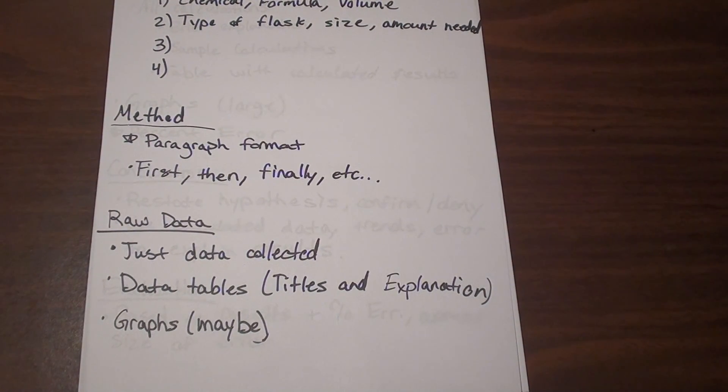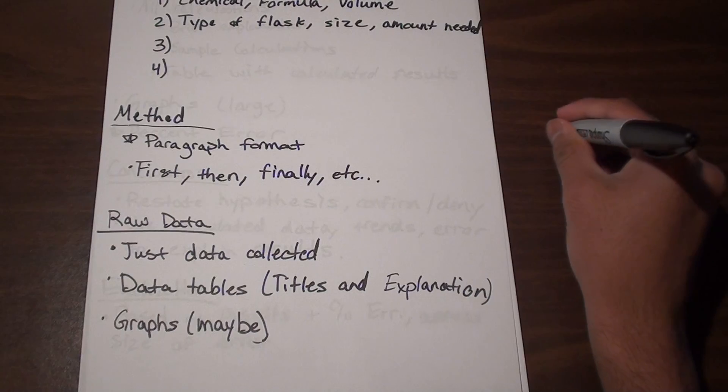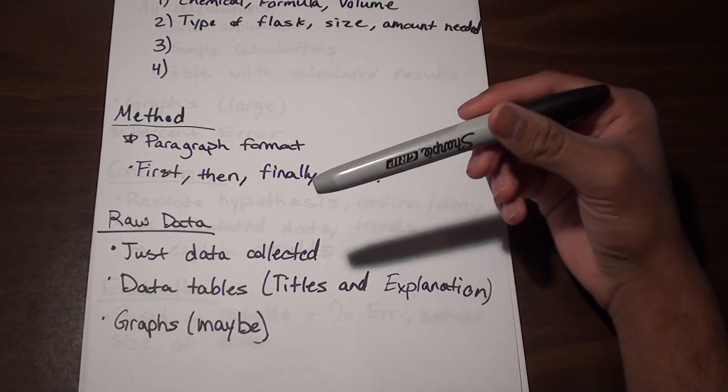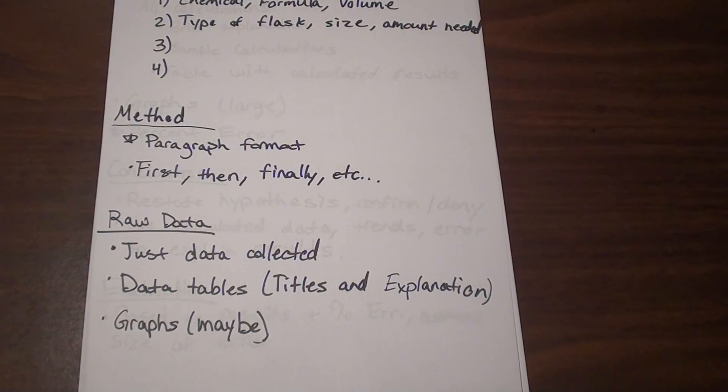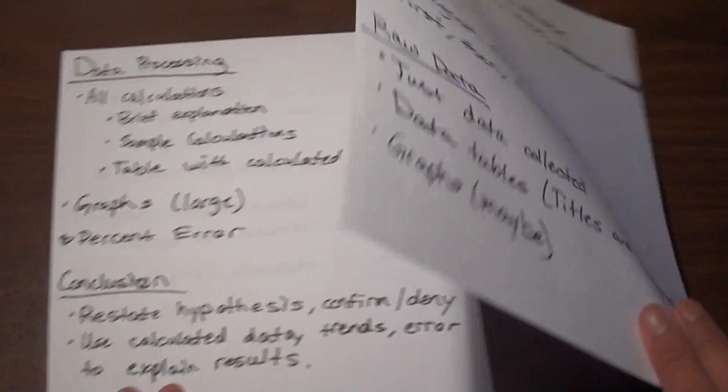Then your next section is going to be raw data. And that's just the data that you collected, which is going to be your dependent variable. And in a lot of these labs, you're going to have to take that data and manipulate it to get your final result, but that's going to happen in data processing later. So you're just going to want to put the data that you collected into tables with a title, and underneath that you're going to need a brief explanation of what the table is. So just say something like table one, right underneath it, and then continue that for all your tables in your report. And then you might have graphs in your raw data section. Probably in the very simple labs you might have a graph in your raw data. In most cases you'll have your graphs in your data processing section.